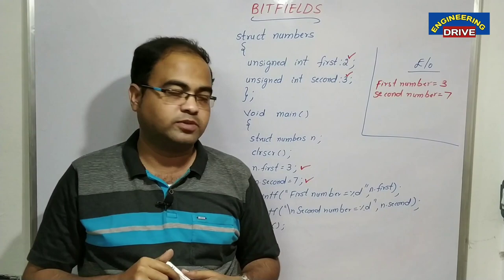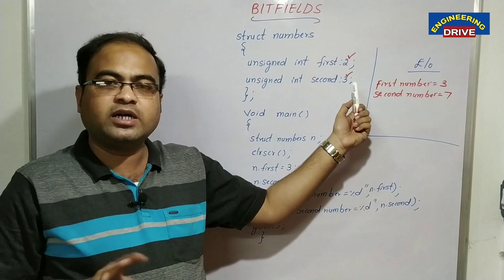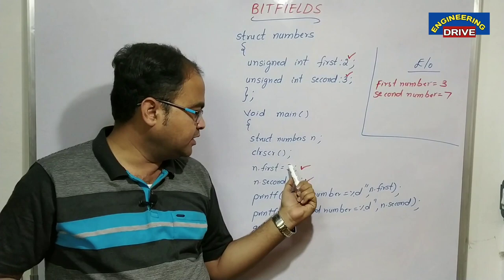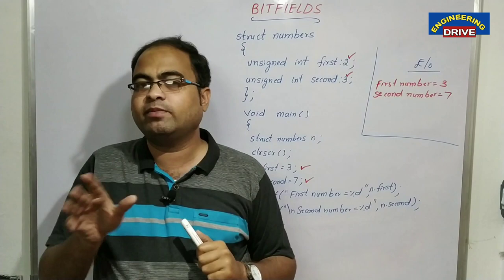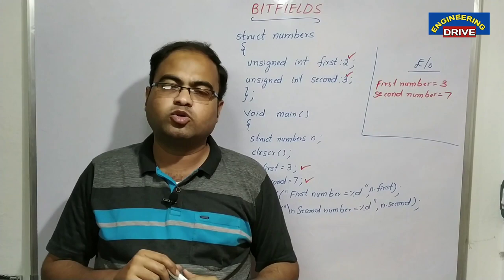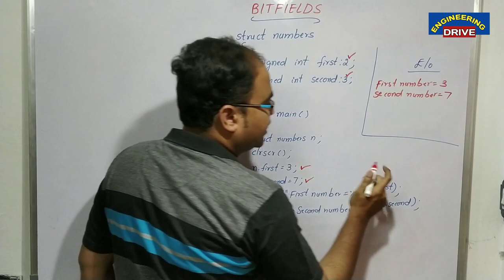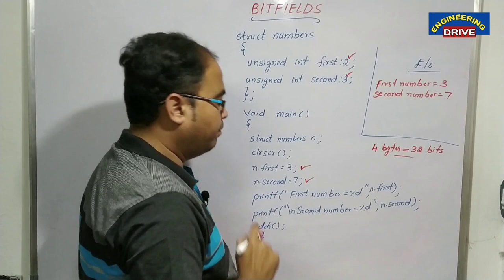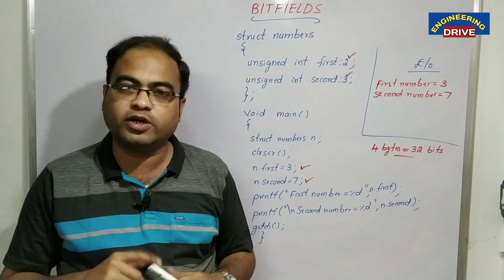What is the use of bit fields? Why do we use bit fields in our C programs? If you don't use bit fields, what happens? Let us take first and second - these two variables belong to data type int. We know that one int variable occupies two bytes of memory, which means the value three will occupy two bytes and seven will occupy two bytes. So four bytes of memory will be reserved for these two values, and four bytes means 32 bits. But how many bits are actually required to store three and seven?